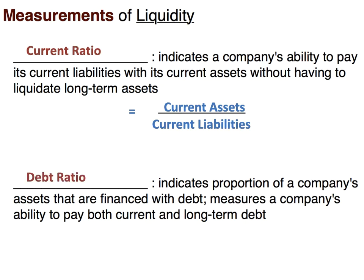The next measure is the debt ratio. This indicates the proportion of a company's assets that are financed with debt, and it measures a company's ability to pay both their current and long-term debt. The equation for the debt ratio is total liabilities divided by total assets. A rule of thumb for the debt ratio would be around 0.6, meaning about 60% of assets financed with debt. A ratio of 0.8 does not necessarily mean they're about to go out of business — that could be normal for their industry. You have to investigate what others in that industry are doing.